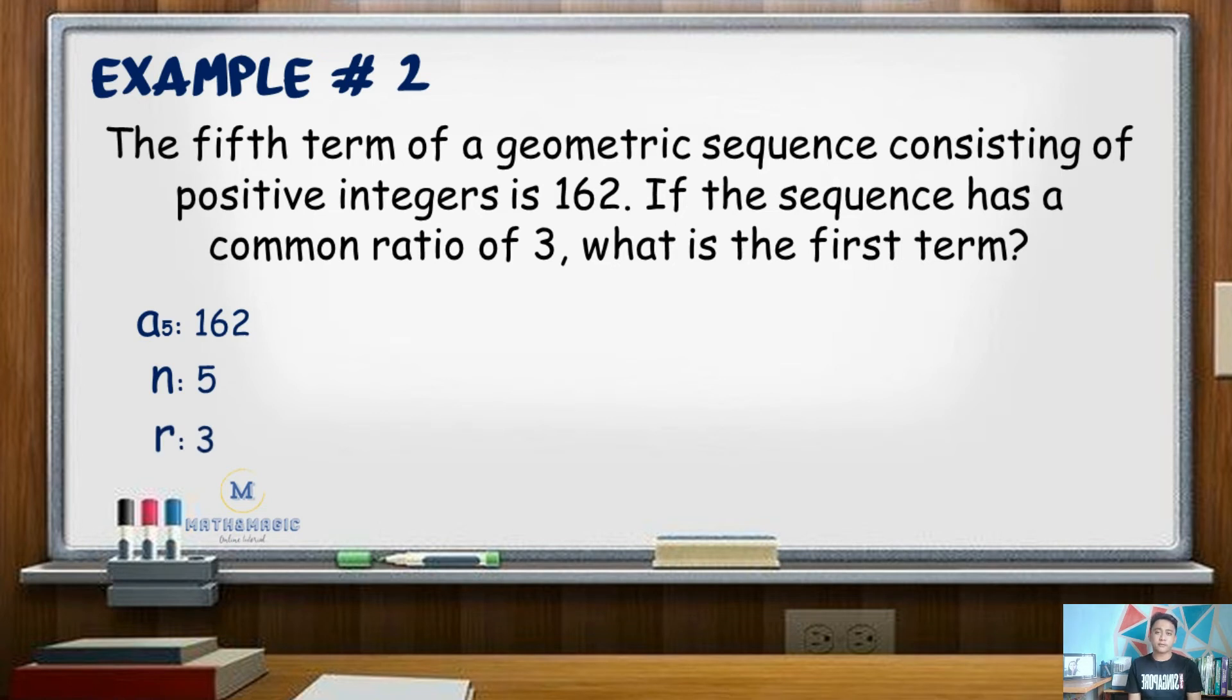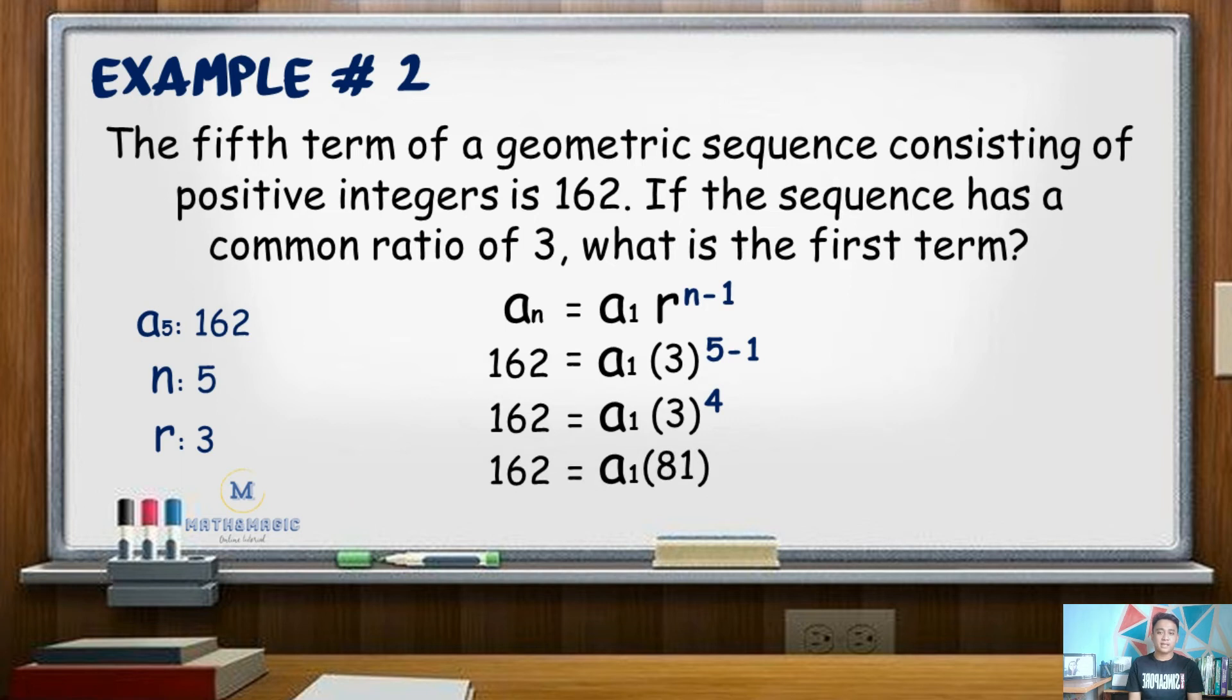We can still use the formula a sub n equals a sub 1 times r raised to n minus 1. We substitute the values: 162 equals a sub 1 times 3 raised to 5 minus 1, which is 3 raised to 4 or 81. Dividing both sides of the equation by 81, we have an a sub 1 value of positive 2.